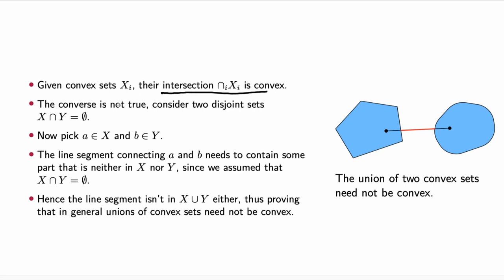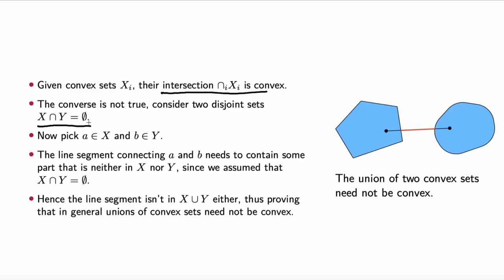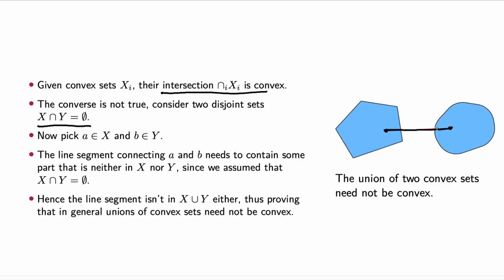However, the converse is not true: the union of two convex sets is not convex. As a counterexample, take two disjoint sets. While the intersection, the empty set, is a convex set, their union would not be, because if they do not intersect and we pick one point A in X and another point B in Y, the line between these does not lie in the union.